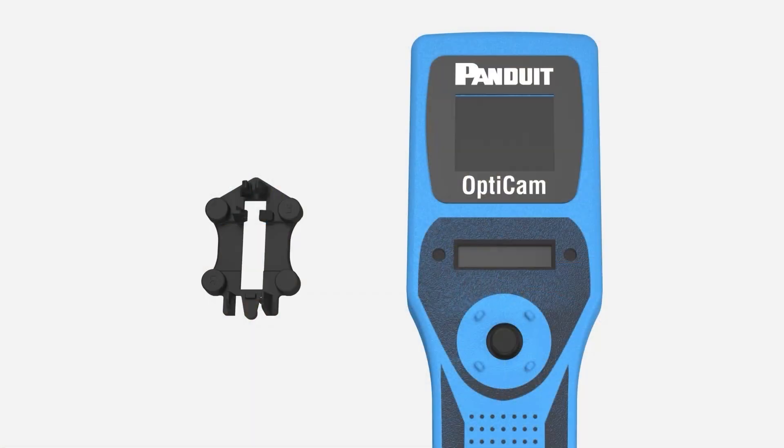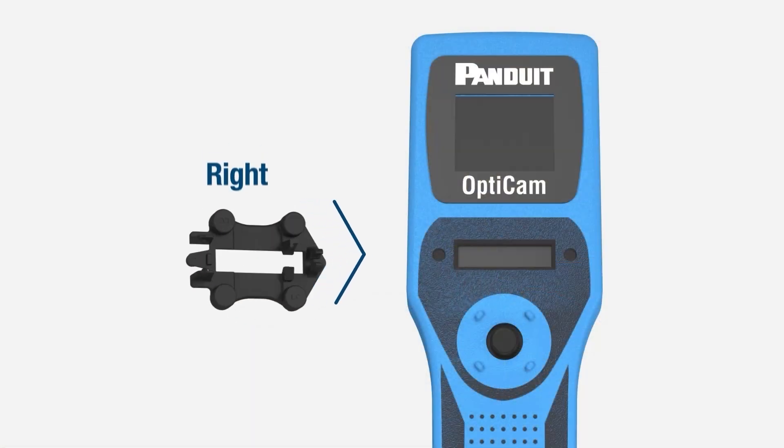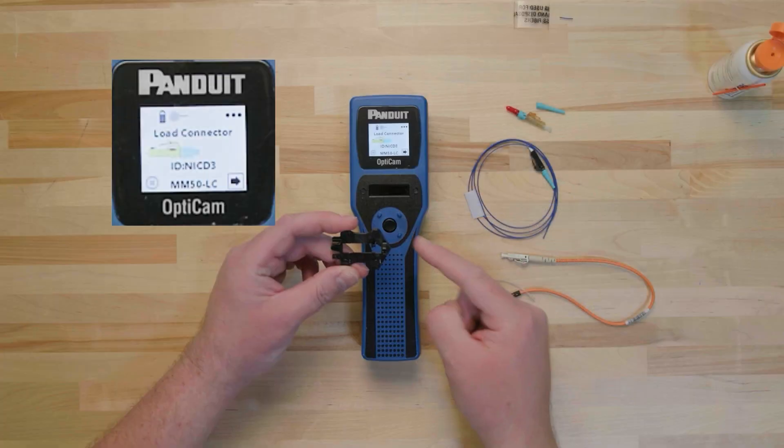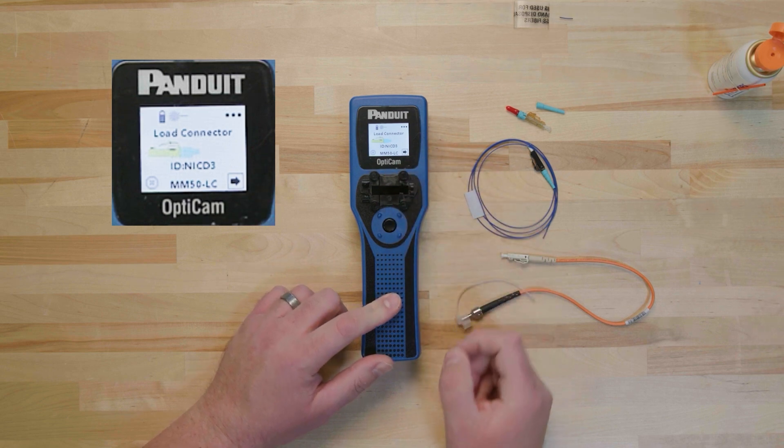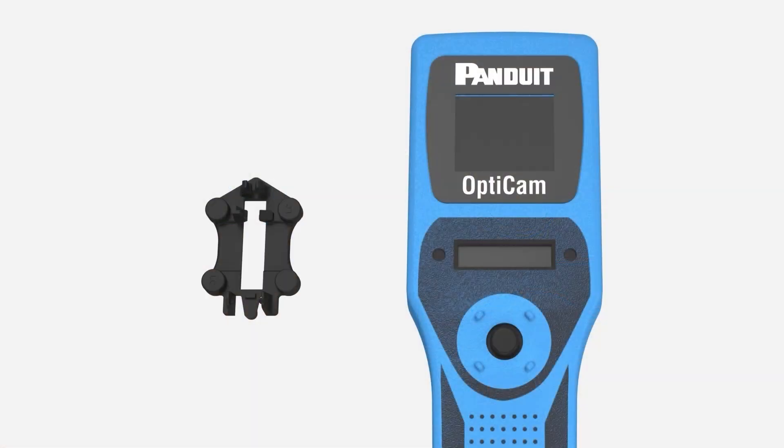Next, install the black LC cradle. For a right-handed termination, orient the cradle so that the arrow points to the right. Place the cradle on top of the aperture window so it magnetically snaps into place. For a left-handed termination, orient the cradle so that the arrow points to the left.